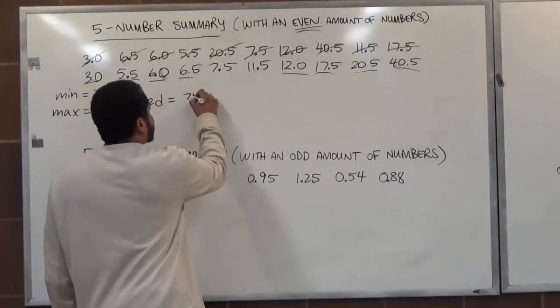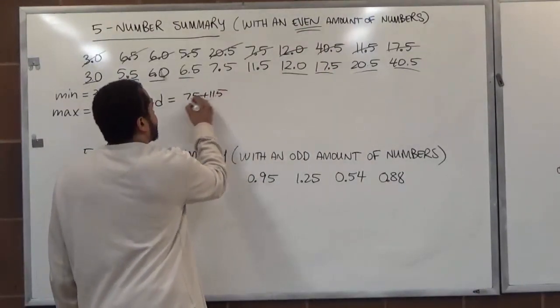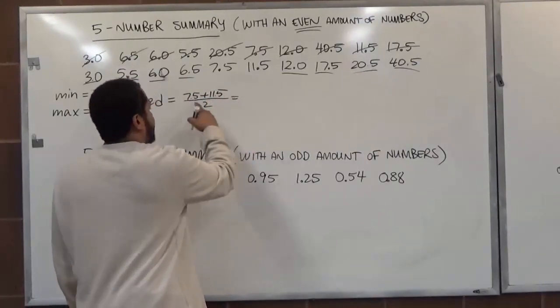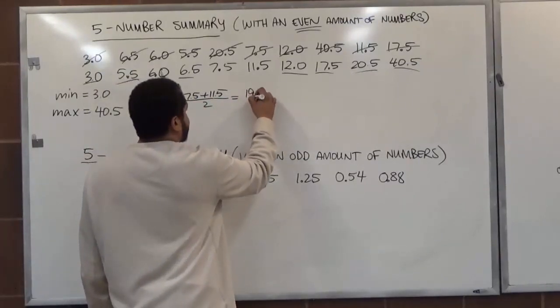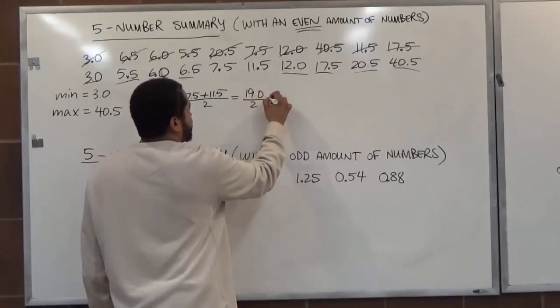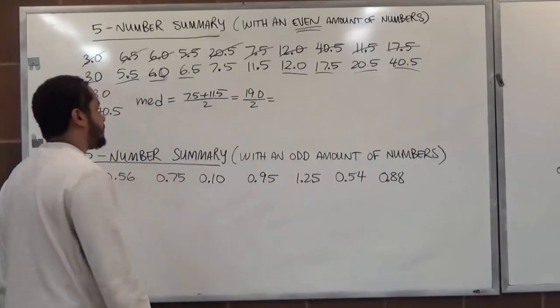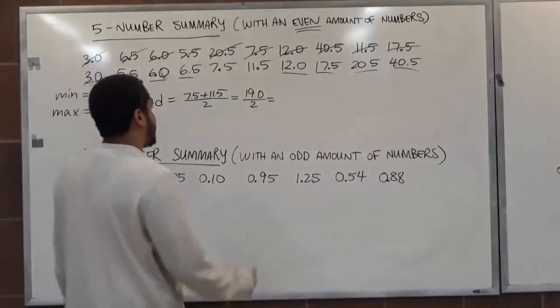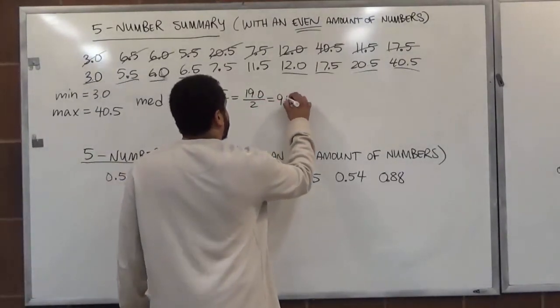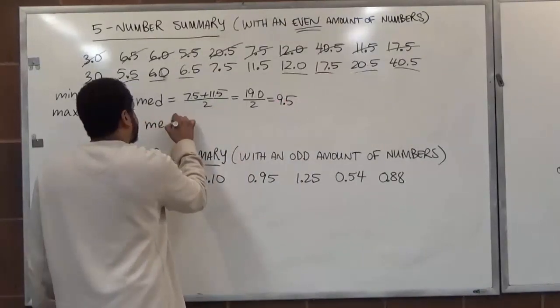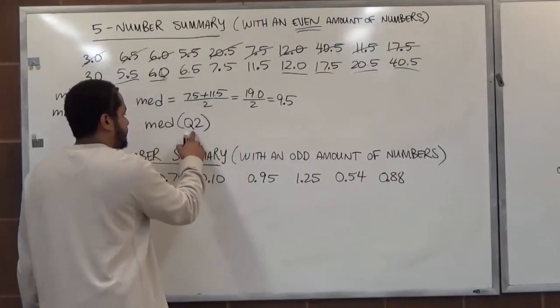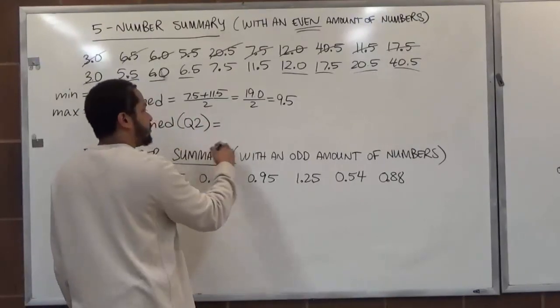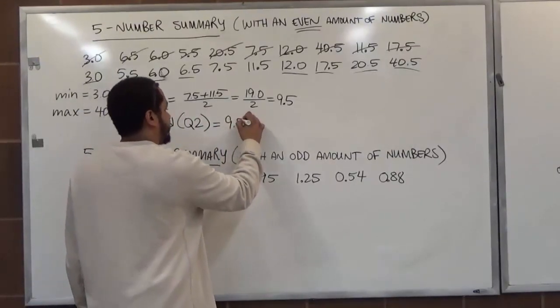So we're going to add 7.5 plus 11.5 and divide them by 2. 7.5 plus 11.5, this gives me exactly 19.0 divided by 2. 19.0 divided by 2, that's going to give me 9.5. So our median here is 9.5. The median is also the second quartile, so I'm just going to write Q2 next to this while I write the 9.5.